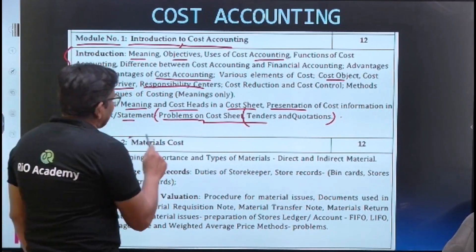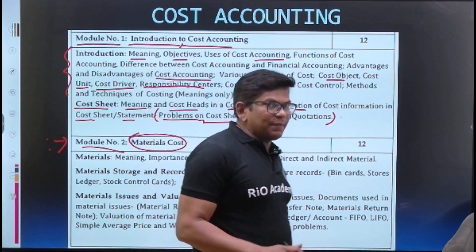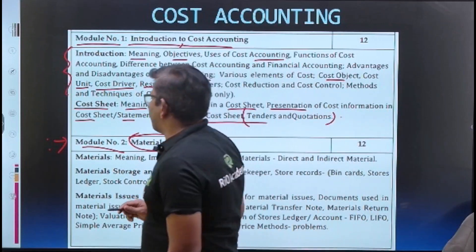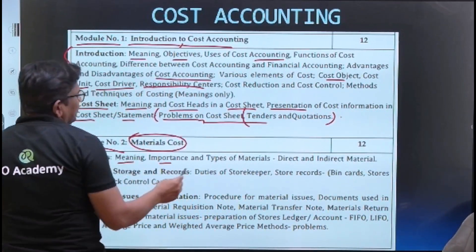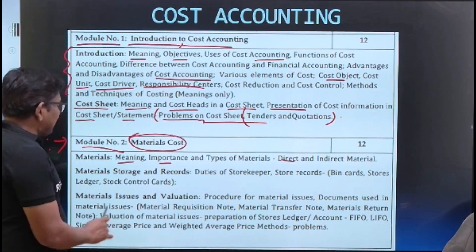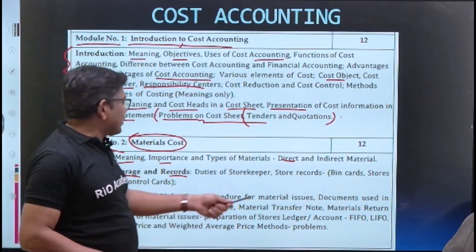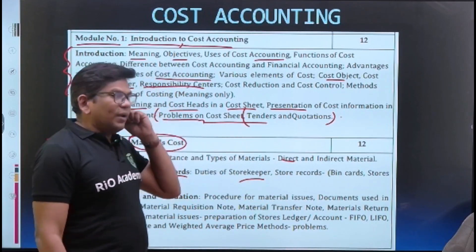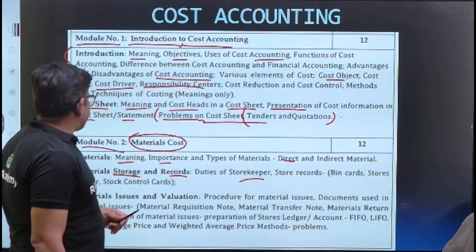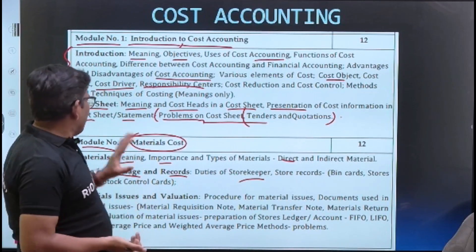We will also cover tender and quotation cost sheet very soon. The second chapter is material costing — LIFO, FIFO, everyone knows that — but material costing has a very wide concept. It covers the meaning, importance, and types of materials, direct and indirect materials, material storage records, duties of the storekeeper, and how to maintain store records like bin cards.